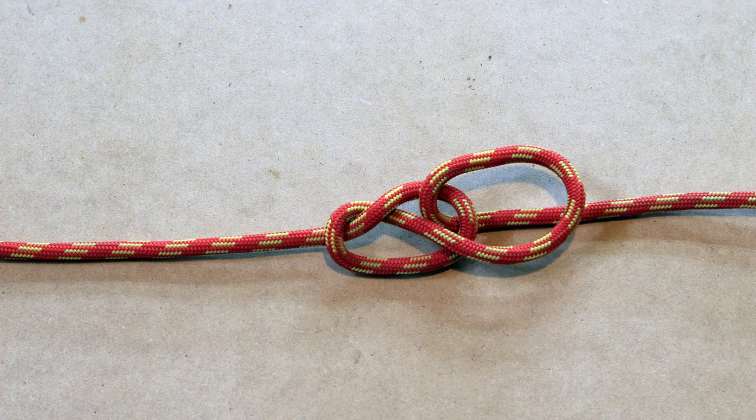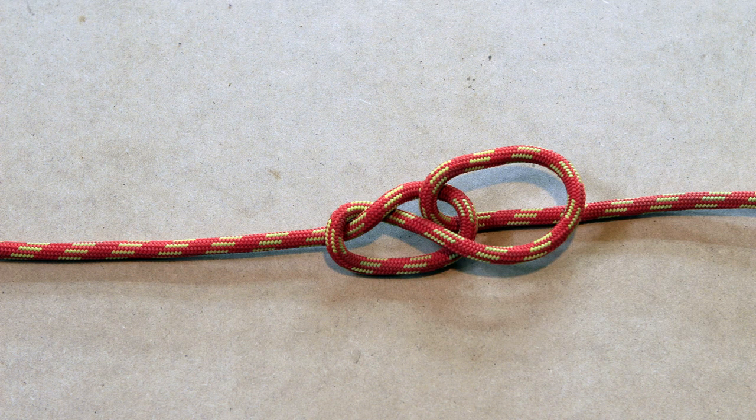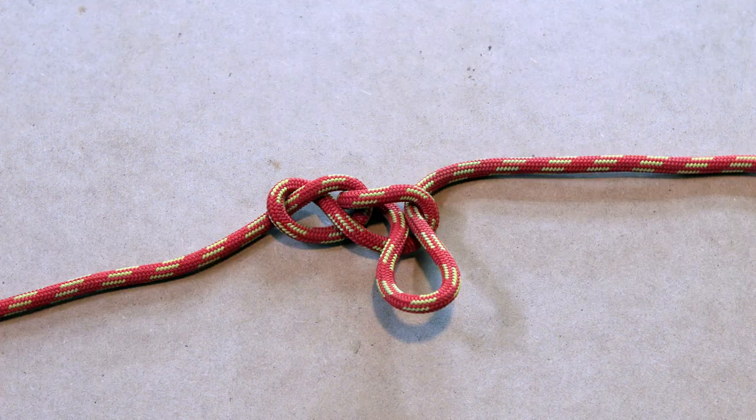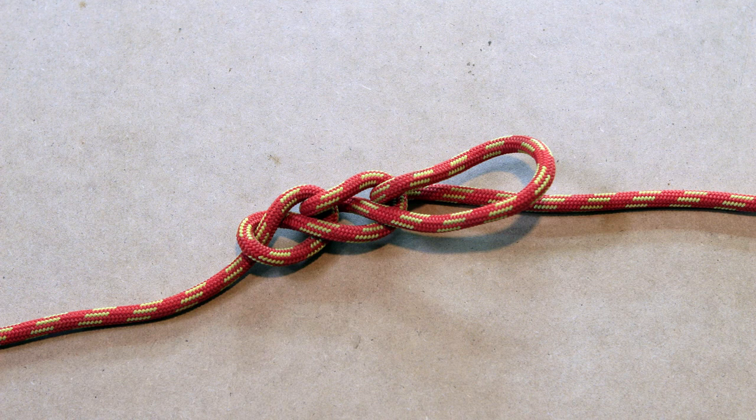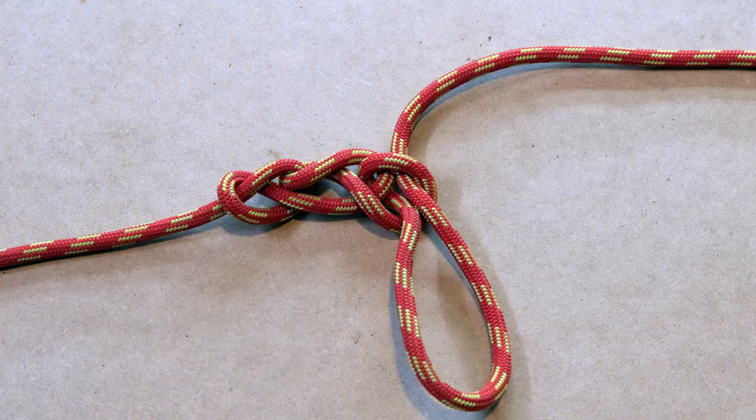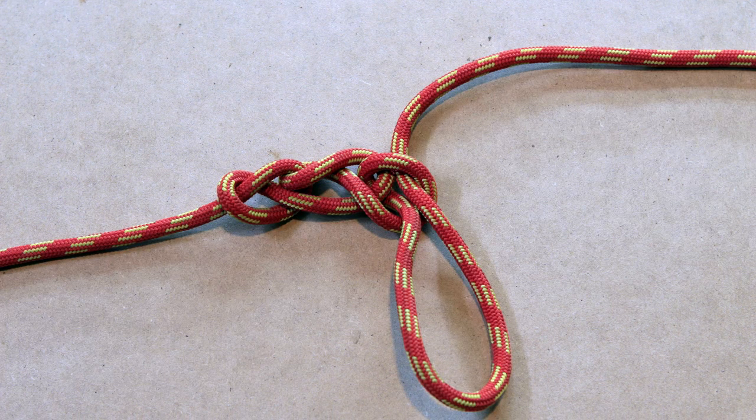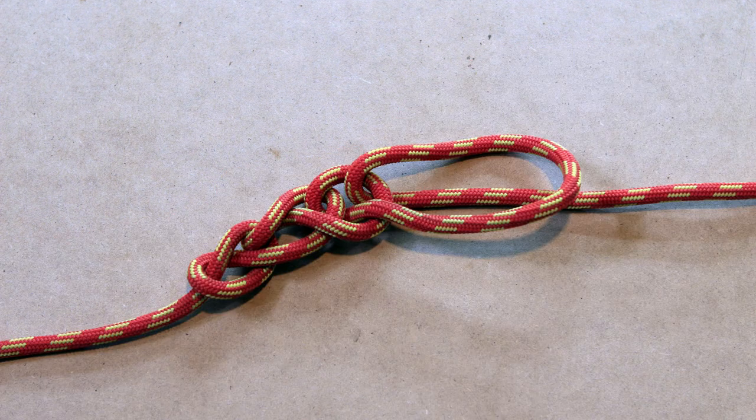Next, take this newly formed bight and lay it over the standing part again. Now pull another bight through to add another link to the daisy chain. If you want a tight chain, then pull on the left part of the bight to take out the slack.